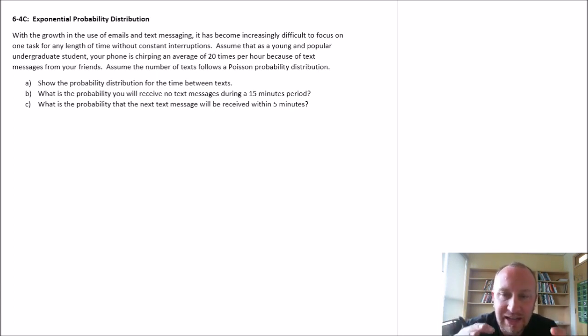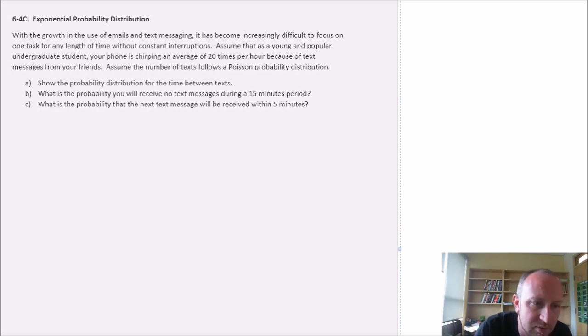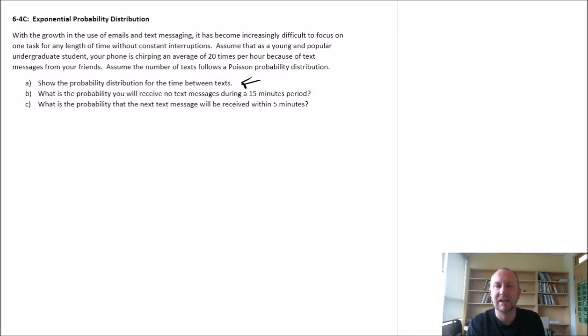But now what we want to look at is to translate this into an exponential probability distribution and obtain that probability distribution for the time between texts. So instead of looking at the number of texts per hour, I want to look at the amount of time between texts. So how do we do this?